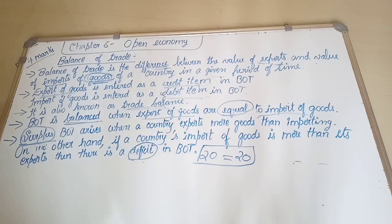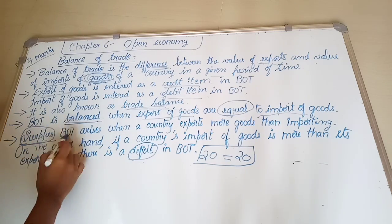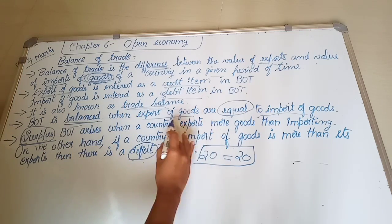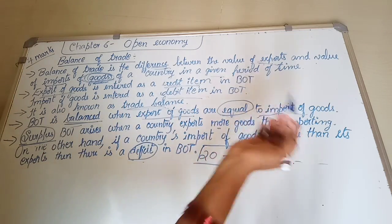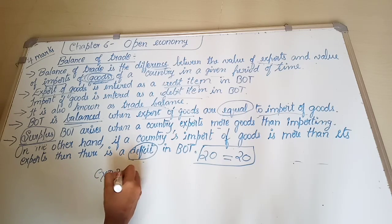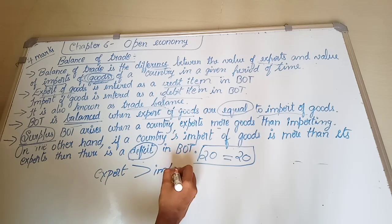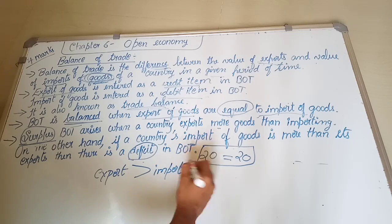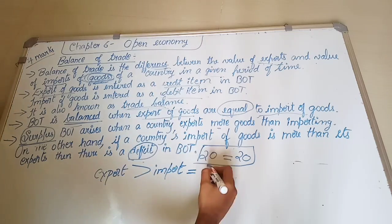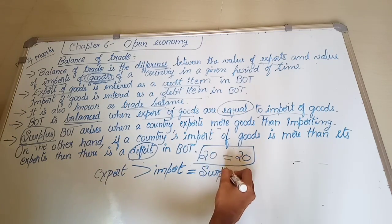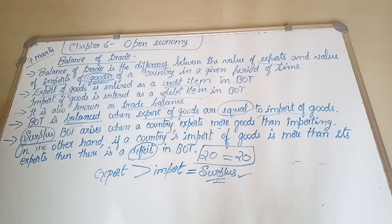Because imports and exports are unlikely to be exactly equal, we have the concepts of surplus and deficit. A surplus BOT arises when a country exports more goods than it imports — that is, when the export of goods is greater than the import of goods. Surplus means there is an excess in the balance of trade.